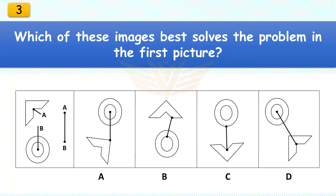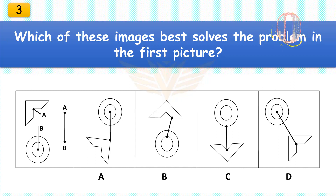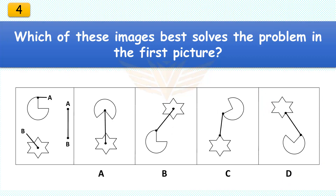Which of these images best solves the problem in the first picture? The correct answer is D. Keep both objects as is but put the bike tire above the corner frame.